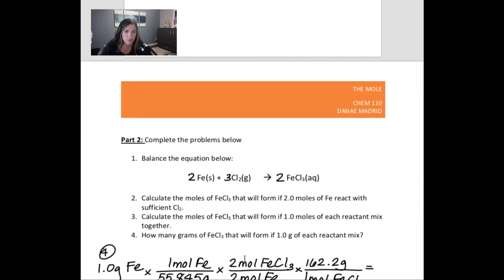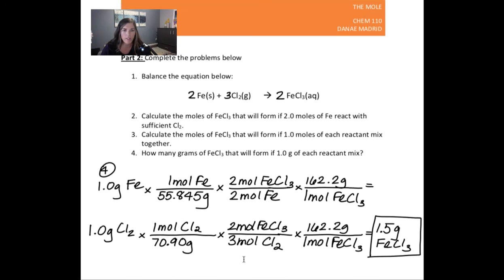Now last, most of you did actually better in this section, but I wanted to show one of the calculations. So balance the equation, we're good with that. This refers to the mole to mole ratio of whatever is in the equation. So that means I need two iron atoms or two iron molecules and three chlorine molecules to create two iron chloride molecules. All right, or individual units. Okay, so let's just look at number four because I think this kind of covers any question that you might have from this section. So it says, how many grams of iron three chloride will form if one gram of each reactant is mixed?